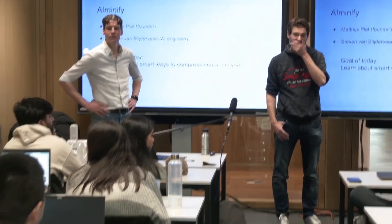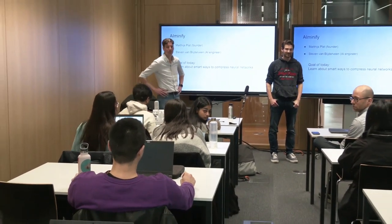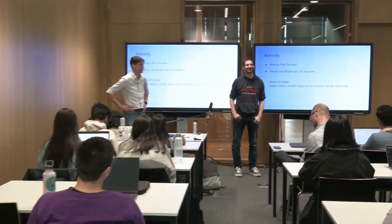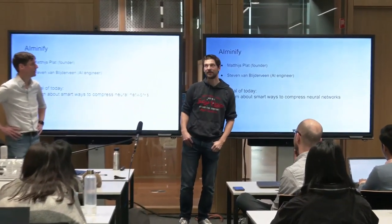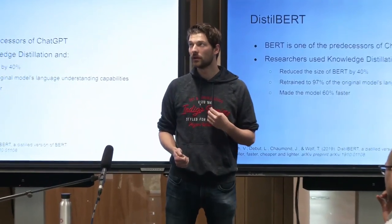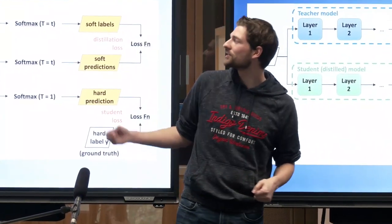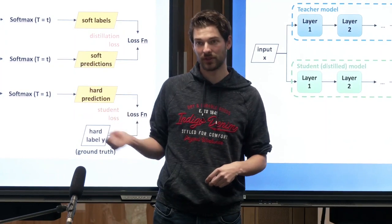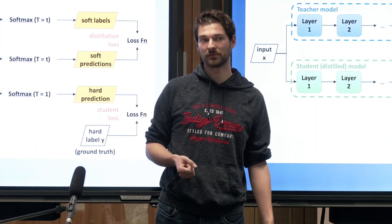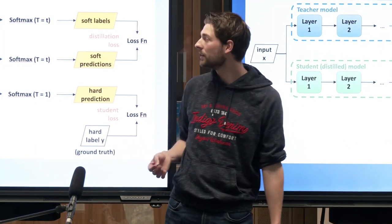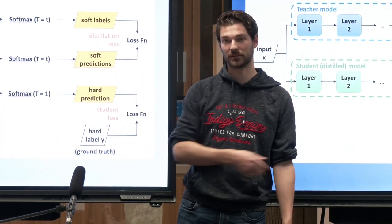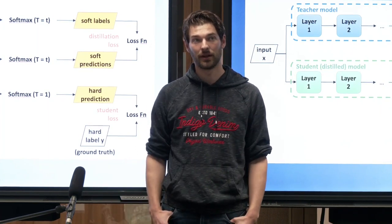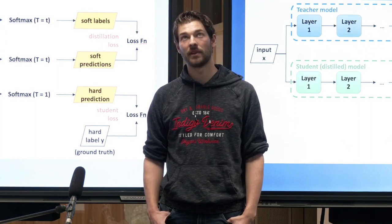A question about the teacher-student model and overfitting: it does depend on how good the teacher model is. The student essentially tries to impersonate the teacher model, so if the teacher has errors, the student will likely replicate those. The knowledge distillation approach is not about improving accuracy — it's about achieving similar accuracy in a smaller and faster model.